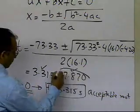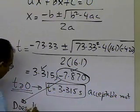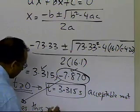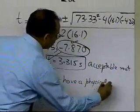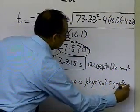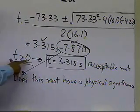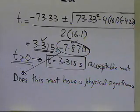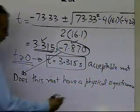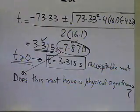What I would like you to do as homework is to see if the root −7.870 has some kind of physical significance in the problem itself. It is not an acceptable root because we can only accept roots where time is greater than 0, but consider whether it has any physical meaning. And that's the end of this segment.